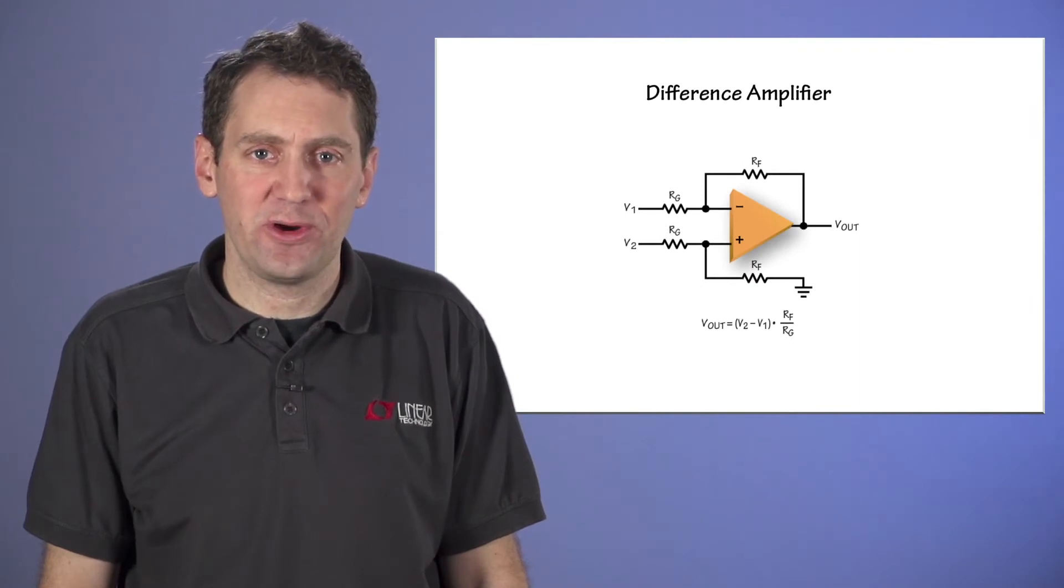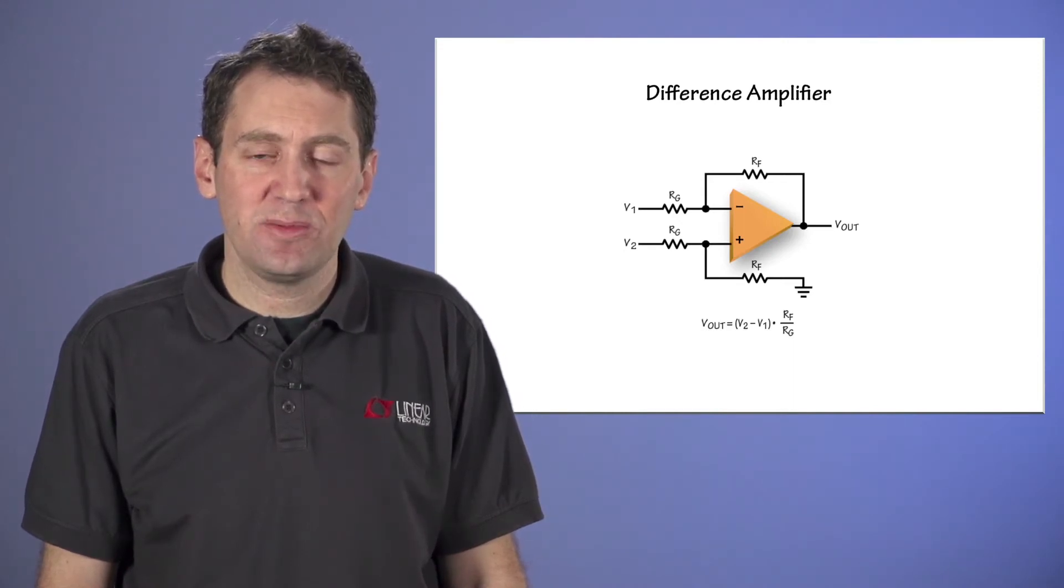This was all pretty basic so far, but a difference amp circuit actually has another sensitivity to resistor error, which is not as well known, but can actually be more serious than gain error. It's called common mode error, or common mode rejection ratio, CMRR.